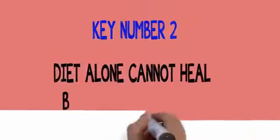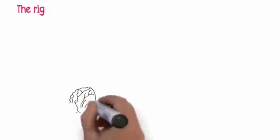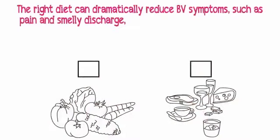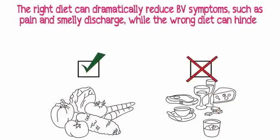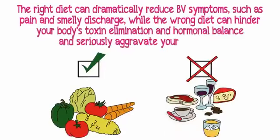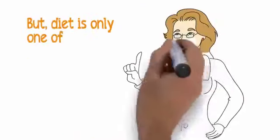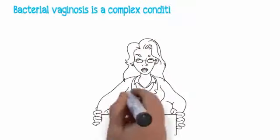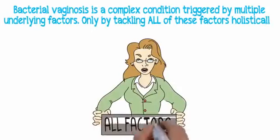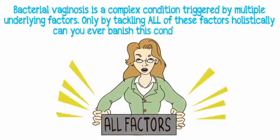Key number two: diet alone cannot heal bacterial vaginosis. The right diet can dramatically reduce BV symptoms such as pain and smelly discharge, while the wrong diet can hinder your body's toxin elimination and hormonal balance and seriously aggravate your condition. But diet is only one of the factors involved. Bacterial vaginosis is a complex condition triggered by multiple underlying factors. Only by tackling all of these factors holistically can you ever banish this condition for good.